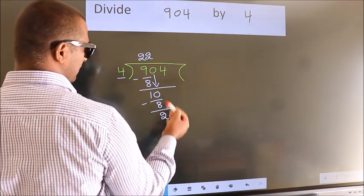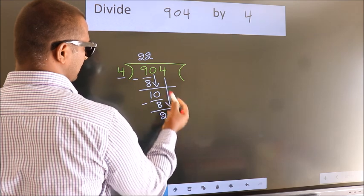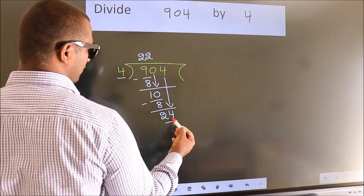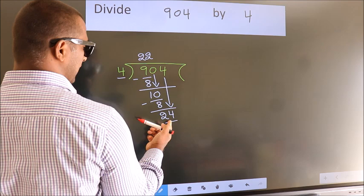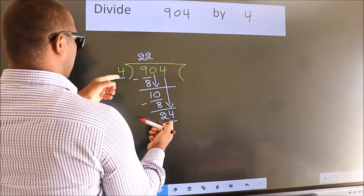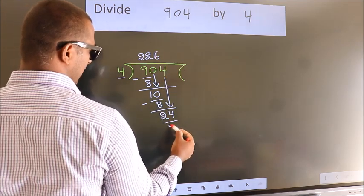After this, bring down the beside number. So, 4 down. So, 24. When do we get 24 in the 4 table? 4 times 6 is 24.